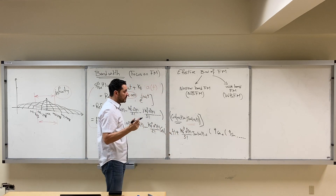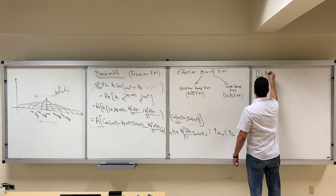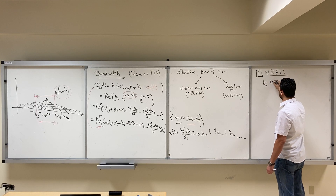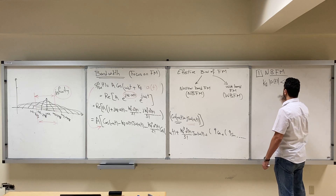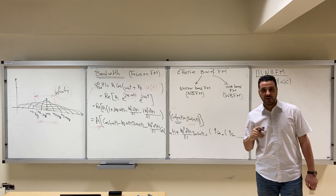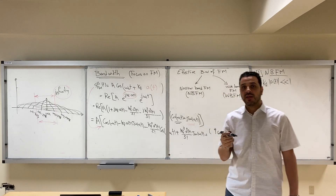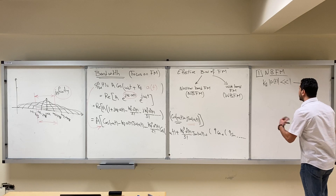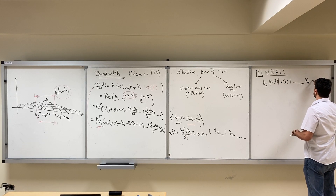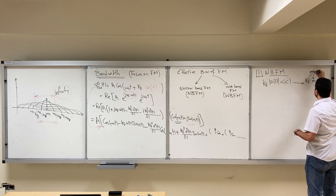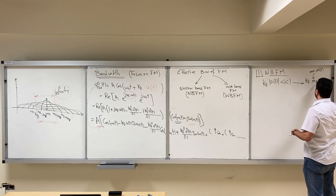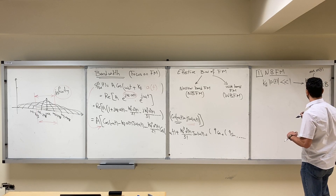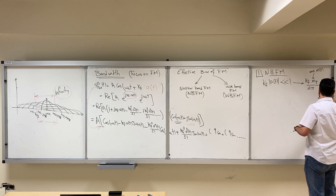In the narrowband FM, the condition is that Kf multiplied by A(t) as a magnitude is much smaller than one. This condition is equivalent to another condition: that Kf multiplied by M-peak, where M-peak is the maximum of M(t), divided by 2π, is much smaller than the bandwidth B of the original signal M(t).